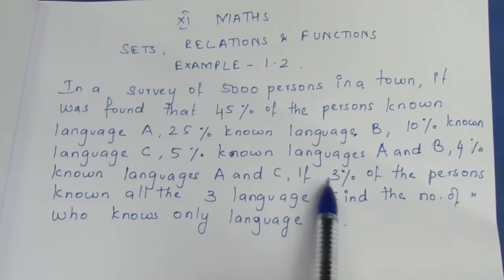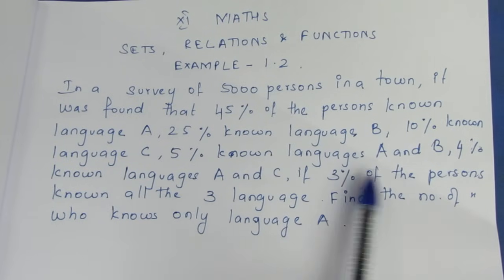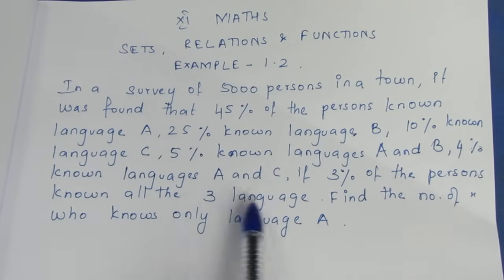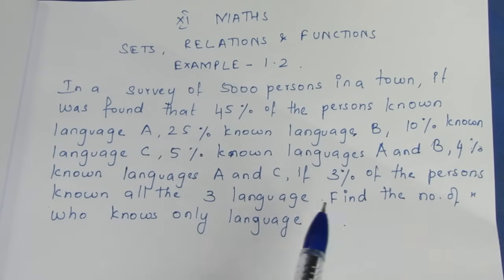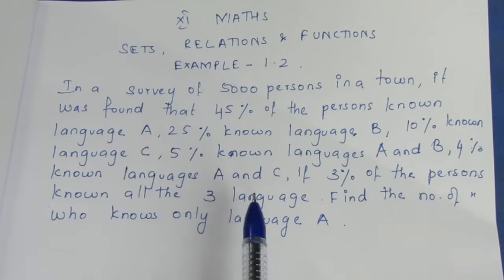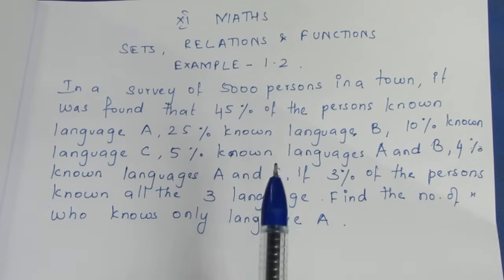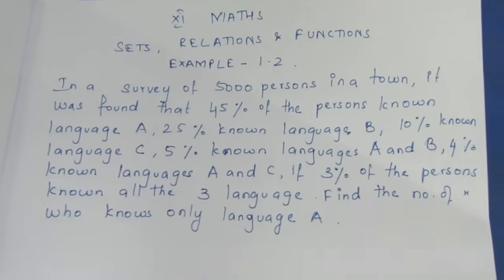Now, if we get an intersection, 3 persons know all 3 languages. If we get an intersection, we can get a plus in a Venn diagram. I'm going to go to the Venn diagram.